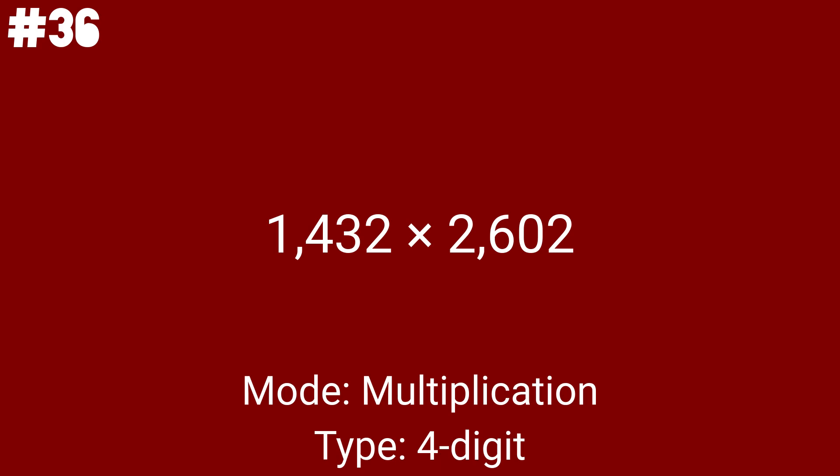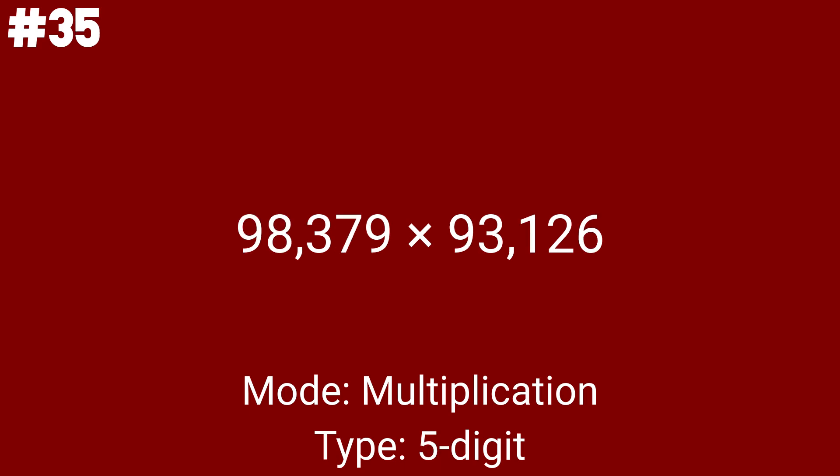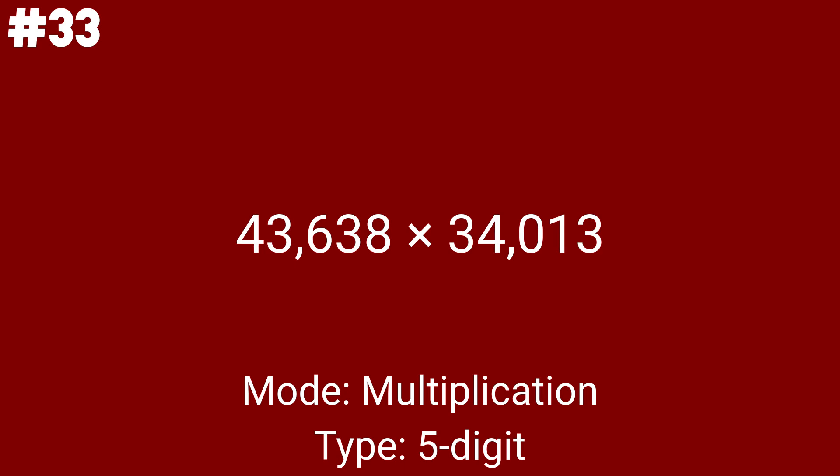Let's move on to the 5-digit multiplication problems. Let's do 98379 times 93126 — the first multiplication problem having 5 digits, and the 21st math problem. The 22nd math problem is 69678 times 22941. We are at the 9th to final multiplication problem right now. This 23rd problem is 43638 times 34013, the last 5 by 5 multiplication problem.